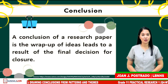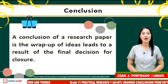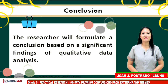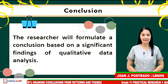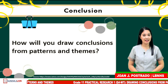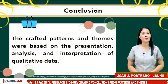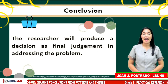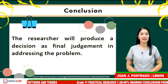How do you define conclusion? A conclusion of a research paper is the wrap-up of ideas that leads to a result — the final decision for closure. After the interpretation of the result, the researcher will formulate a conclusion based on the significant findings of a qualitative data analysis. The crafted patterns and themes are based on the presentation, analysis, and interpretation of qualitative data. After getting the significant findings, the researcher will produce a decision as final judgment in addressing the problem.